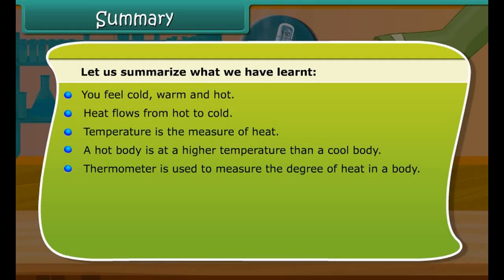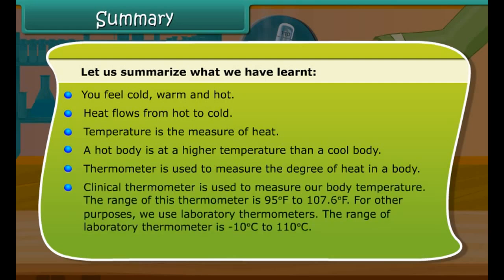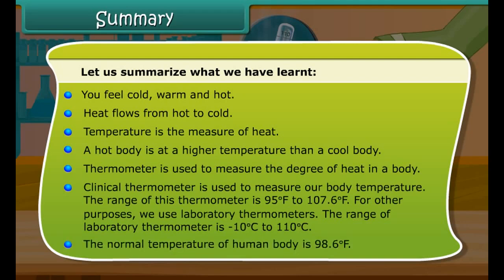Summary: You feel cold, warm and hot. Heat flows from hot to cold. Temperature is the measure of heat. A hot body is at a higher temperature than a cool body. A thermometer is used to measure the degree of heat in a body. A clinical thermometer is used to measure our body temperature; its range is 95 degrees Fahrenheit to 107.6 degrees Fahrenheit. For other purposes, we use laboratory thermometers; the range of a laboratory thermometer is minus 10 degrees Celsius to 110 degrees Celsius. The normal temperature of the human body is 98.6 degrees Fahrenheit.